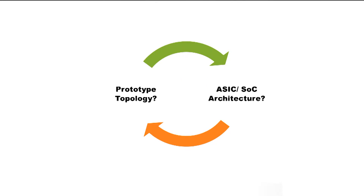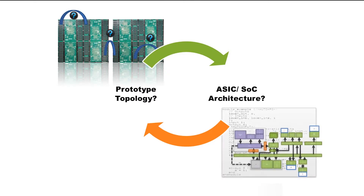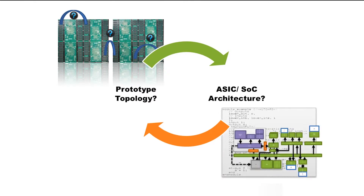There is usually a circular dependency between the topology of the FPGA-based prototype system and the architecture of the ASIC design, making it challenging to know where to start the partition task.